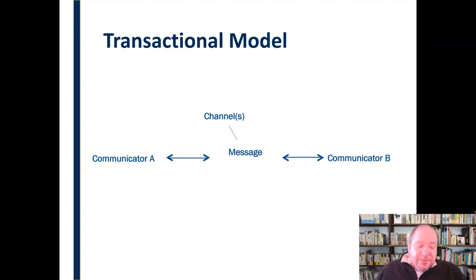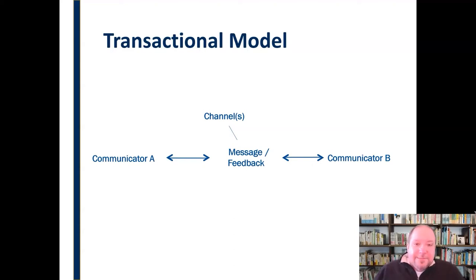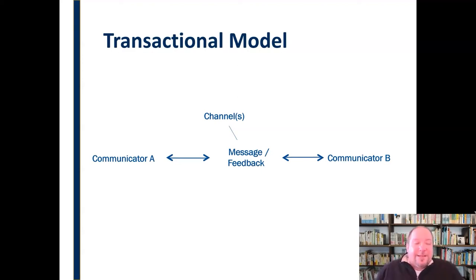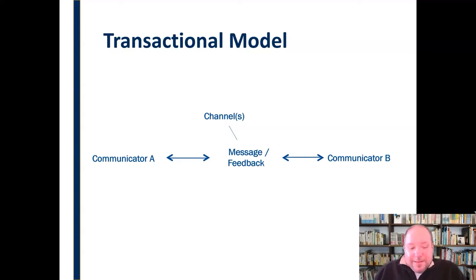Both people are senders and receivers. Communicator B has this element of feedback — communicating in response to the message of Communicator A — and this is all happening simultaneously. It's not that Communicator A sends a message and then there's a delay before feedback comes. While I'm speaking to somebody, I'm checking their facial expressions, tone of voice, whether they interrupt me, or even whether they fall asleep — that's all types of feedback, and it's happening right at the same time. So the message and feedback system happens simultaneously, all through one or more channels of communication.